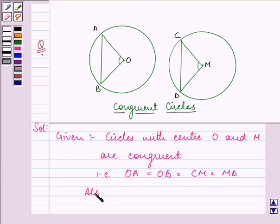Also, we are given that the angles that they are subtending at the center are equal to each other. So angle AOB is equal to angle CMD. This is also given to us in the question.